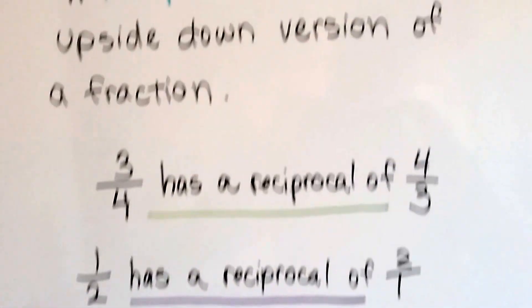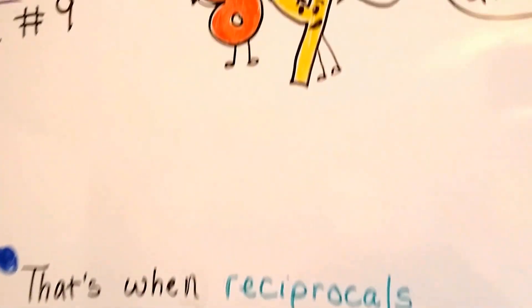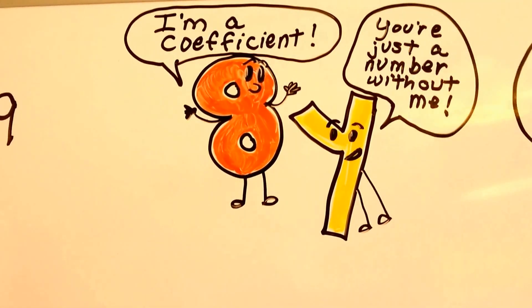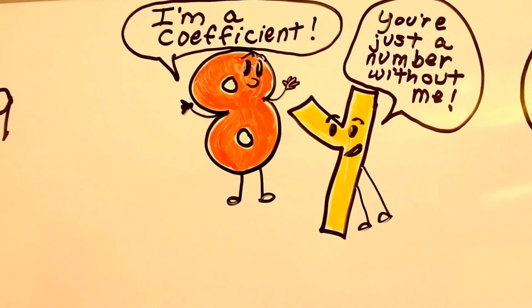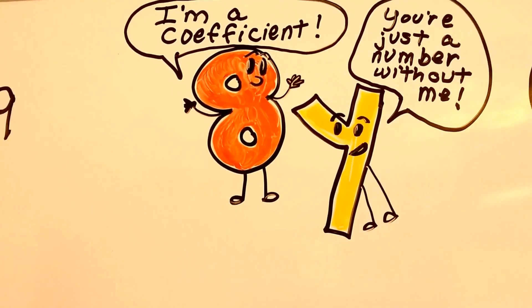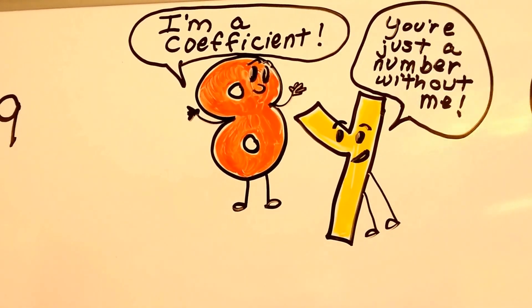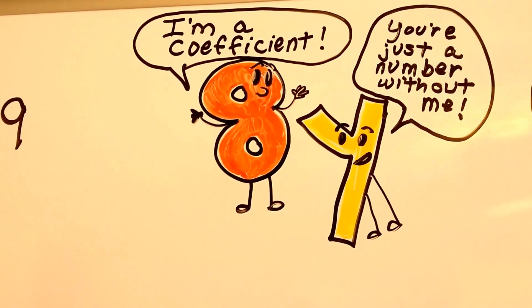So do you remember what a coefficient is? Do you remember a coefficient is the number in front of a variable? And if that variable ever left, then he would just be a standalone number. He'd be nothing. He would just be a lonely number.